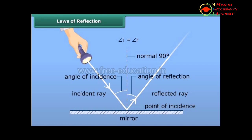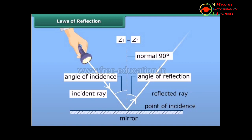Let us study about it in detail. The reflection of light at a surface obeys the following two laws, which are called the laws of reflection. According to these laws: the angle of incidence is always equal to the angle of reflection, that is angle I is equal to angle R; and the incident ray, the normal at the point of incidence, and the reflected ray all lie in the same plane.